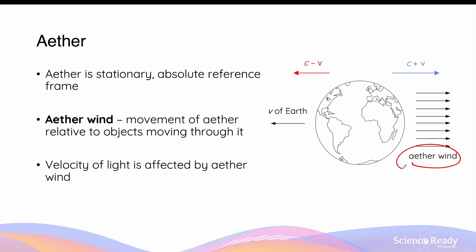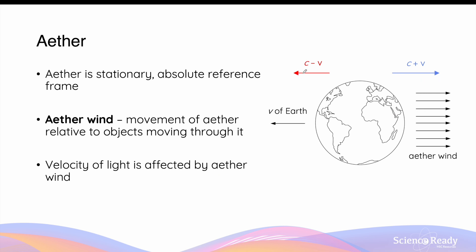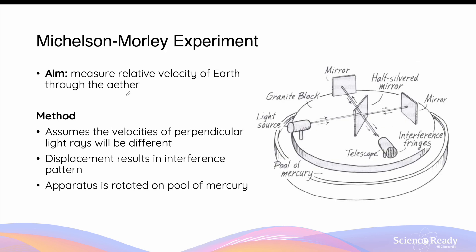The direction of this ether wind is important to consider because the model proposes that light's velocity, like every other mechanical wave, is also affected by the direction of ether wind. If light propagates in the same direction as the ether wind, its velocity will increase. If light is travelling in the opposite direction as the ether wind, then its velocity will decrease.